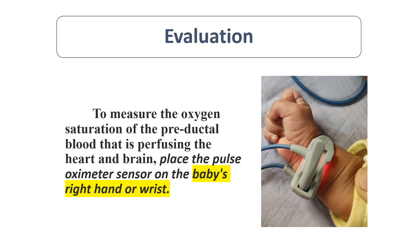Always connect the pulse oximeter sensor to the right hand because pre-ductal blood saturation should be monitored. All SpO2 readings given according to minutes of life are pre-ductal SpO2. The sensor can be placed on the right hand or right wrist.